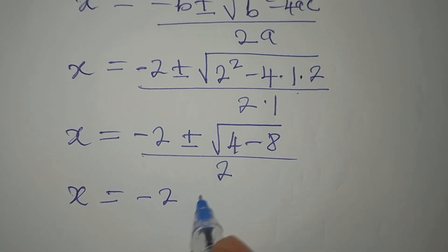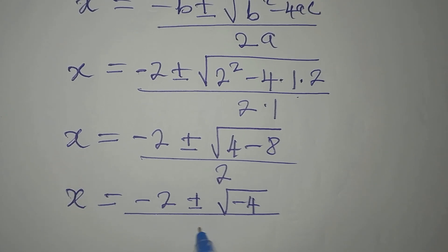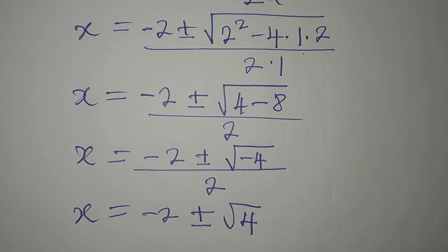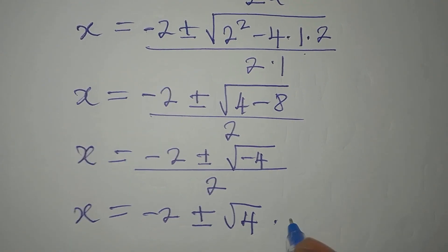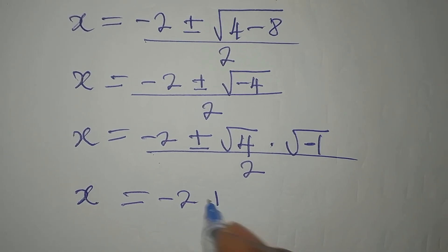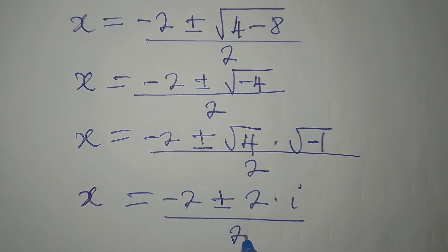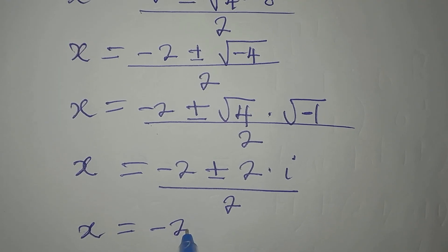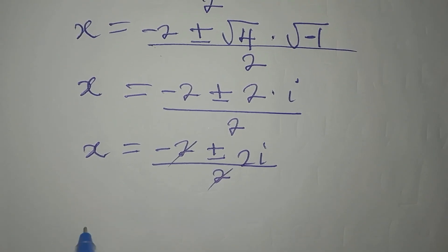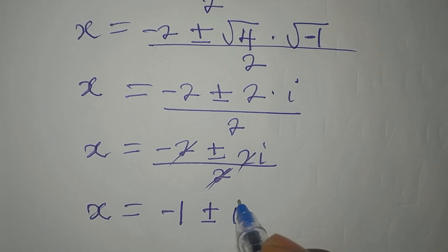So x is minus 2 plus or minus the square root of 4 minus 8, which is minus 4, divided by 2. We write minus 4 as the square root of 4 multiplied by the square root of negative 1, then divide by 2. Going ahead: the square root of 4 is 2, and the square root of negative 1 is i. So x is minus 2 plus or minus 2i, all over 2. Dividing through by 2, x becomes minus 1 plus or minus i.